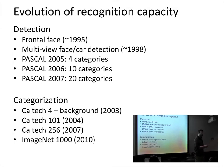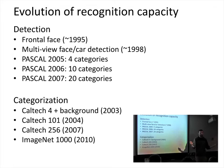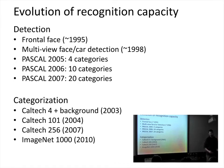The implication of this kind of progress is that if we could only get enough categories, then maybe we would finally have a complete recognition system. Maybe if we had the 30,000 categories that Biedermann says is the complete set of recognizable categories, then we would be able to recognize everything.